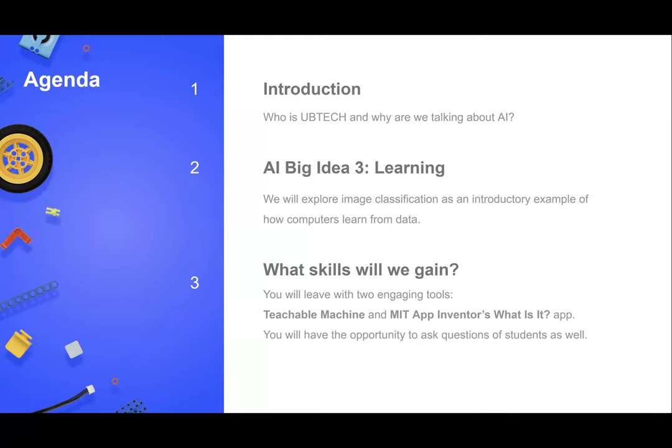This is the third of a five-part series. Today we're on big idea number three: learning. We're going to be looking at five big ideas in this series. Today, what are you going to take from this? We're going to explore image classification and talk about that as an introductory example of how computers learn from data. We want to see how computers actually learn to mimic the human brain.